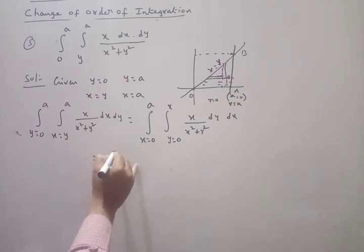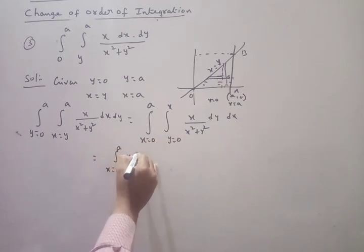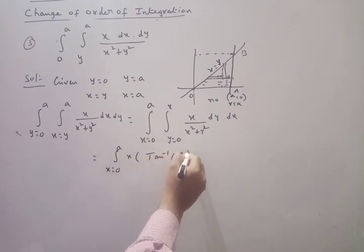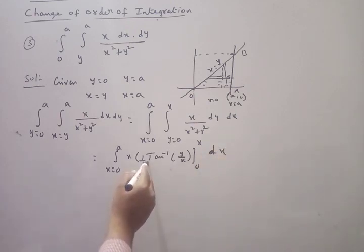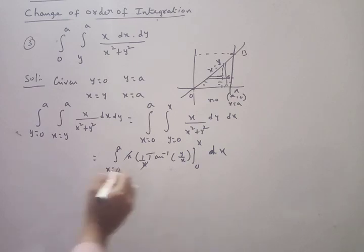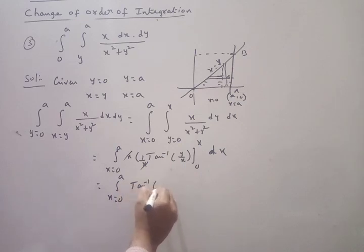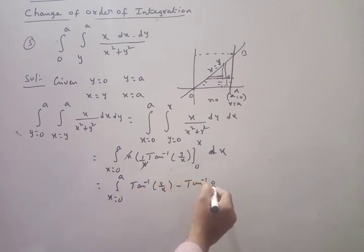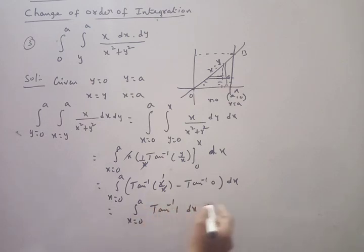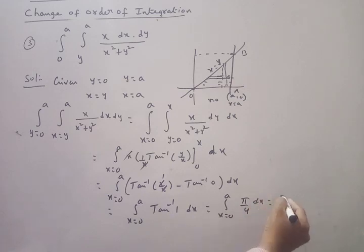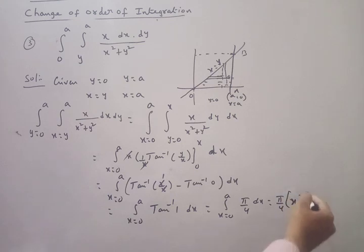So the integral becomes X from 0 to a, Y from 0 to X of X/(X²+Y²) dY dX. Integrating with respect to Y: X · (1/X) · tan⁻¹(Y/X) with limits 0 to X. X and X cancel, giving tan⁻¹(X/X) − tan⁻¹(0) = tan⁻¹(1) − 0 = π/4. Integrating π/4 with respect to X from 0 to a gives π/4 · a = πa/4.